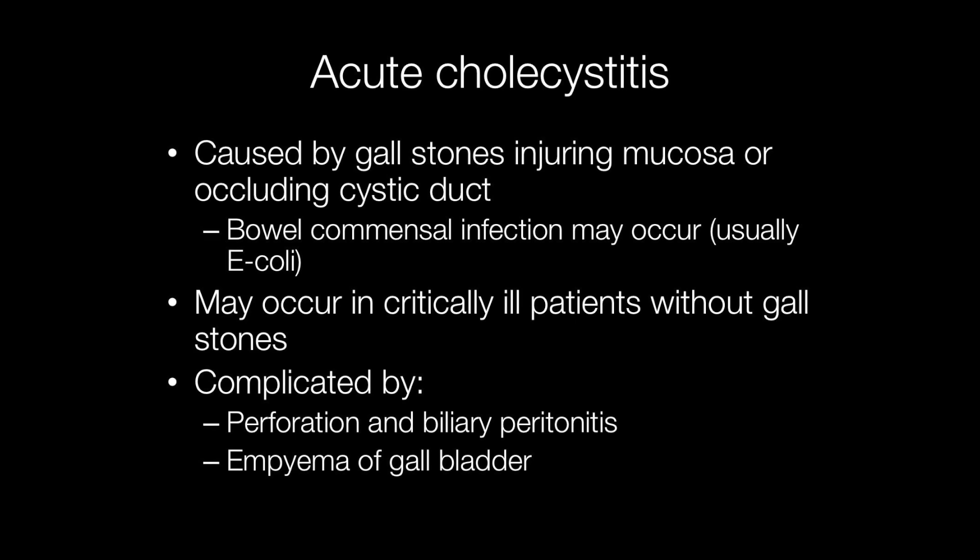The common complication of cholelithiasis is acute cholecystitis, which is caused by gallstones injuring the gallbladder mucosa or occluding the cystic duct through which bile drains out of the gallbladder. The gallbladder may become infected with bowel commensals, usually E. coli. Sometimes, however, in critically ill patients, acute cholecystitis can occur without gallstones.